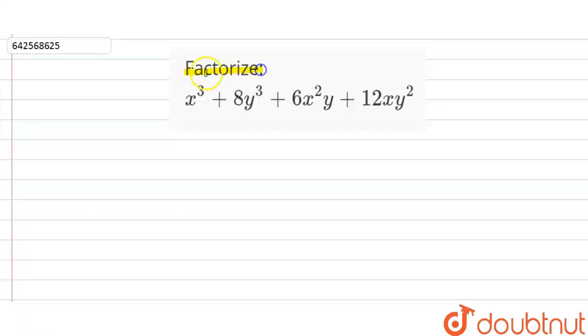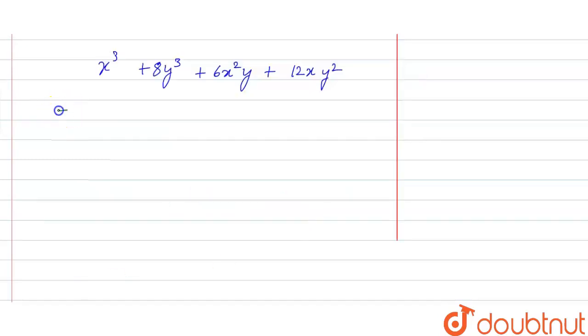So we have to factorize the given expression and the expression given to us is x cube plus 8y cube plus 6x square y plus 12xy square.